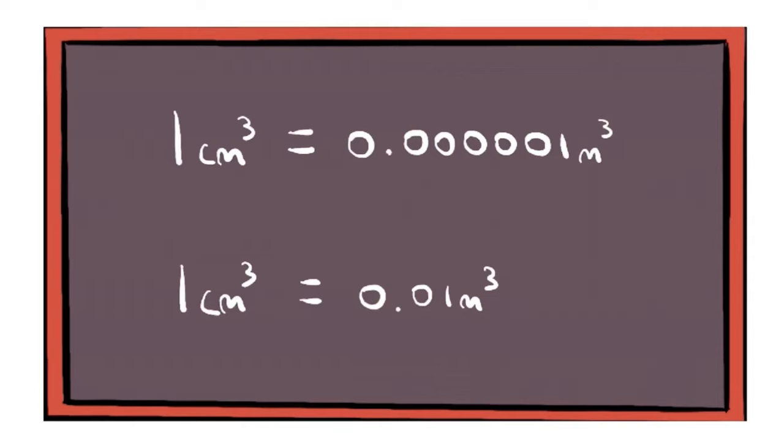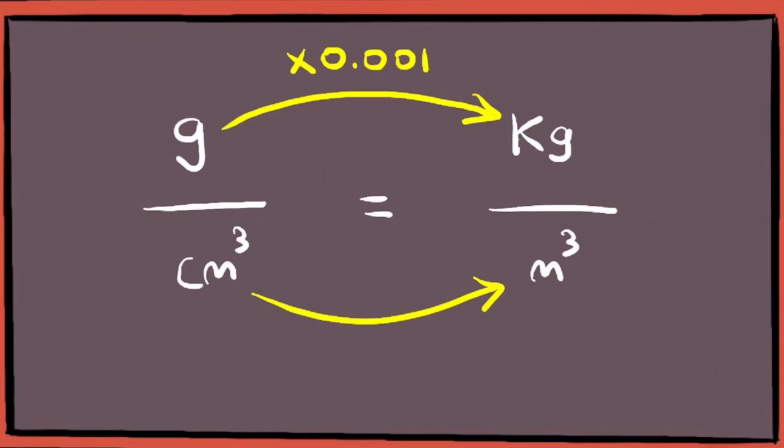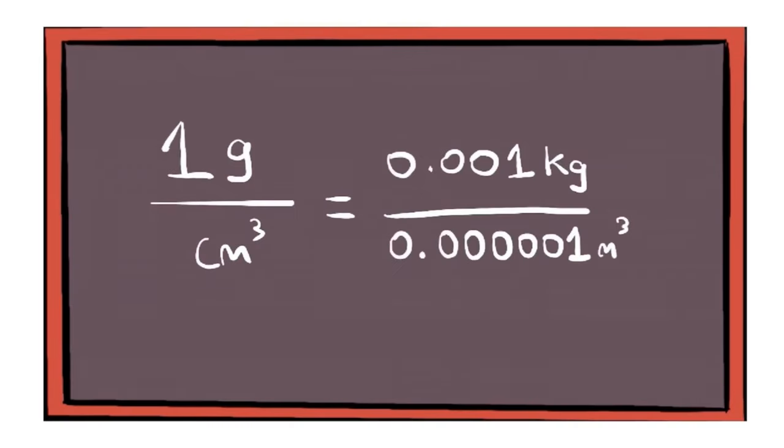So actually, 1 cm³ equals 0.00001 m³ and not equals to 0.01 m³. So back to the question, to convert the denominator, you need to multiply it by 0.00001, and after simplifying it, the answer will be 1,000 kilograms per meter cube.